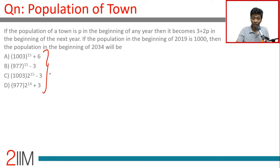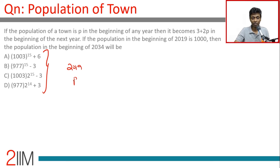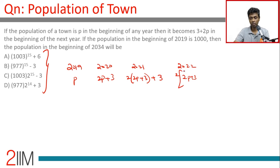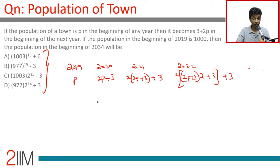The population of a town is p at the beginning of any year, then it becomes 3 + 2p at the beginning of the next year. The population at the beginning of 2019 is 1000. So: 2019 is p, 2020 is 2p + 3, 2021 is 2(2p + 3) + 3, 2022 is 2(2(2p + 3) + 3) + 3, and so on.